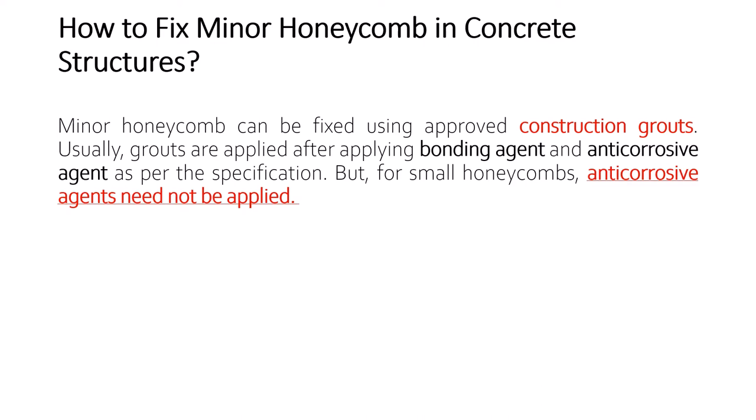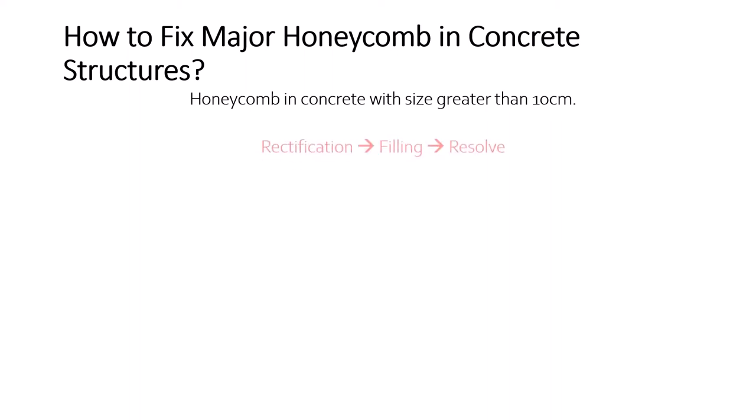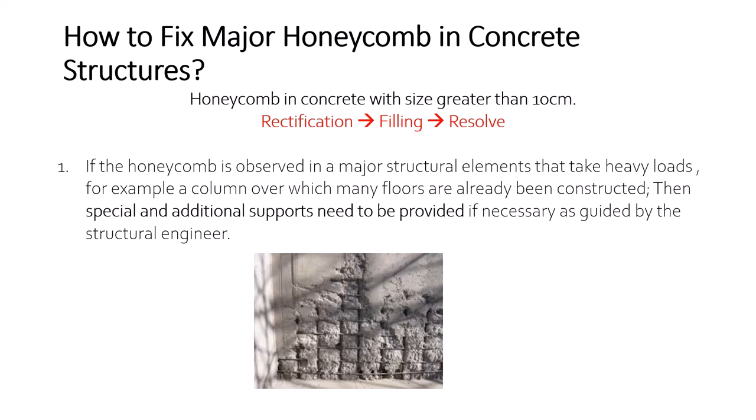Now, how to fix major honeycomb in concrete structures. Major honeycombs are those observed in sizes greater than 10 centimeters. As the name explains, these are major defects seen on the concrete surface which have a high impact on structural integrity. The figure shows honeycomb observed on a shear wall.